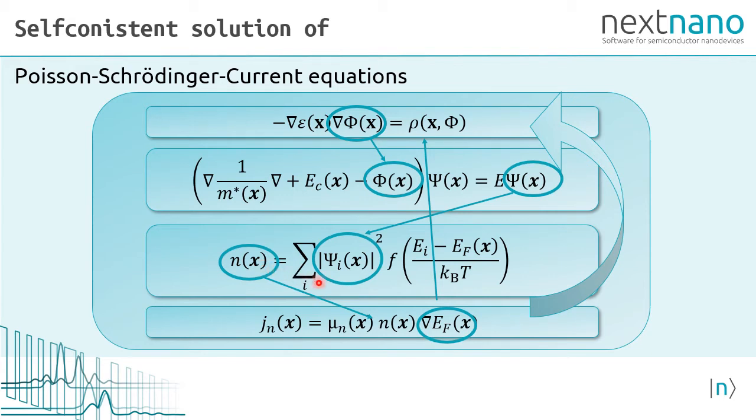The quantum density enters into the current equation where we calculate the quasi Fermi energy levels. And then the whole cycle starts again and we have to iterate until we have found a converged solution, which is very challenging by the way.